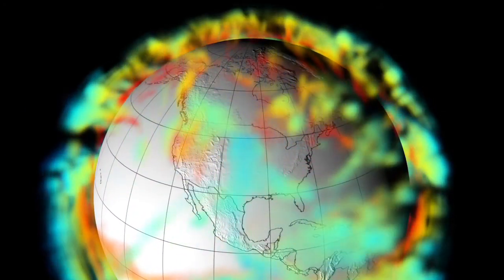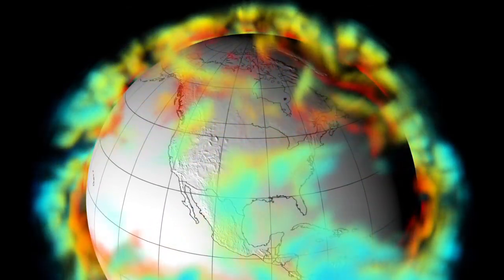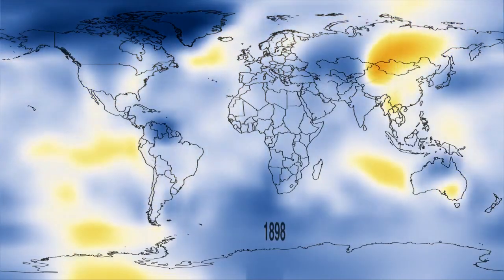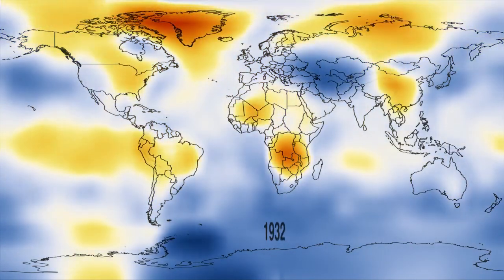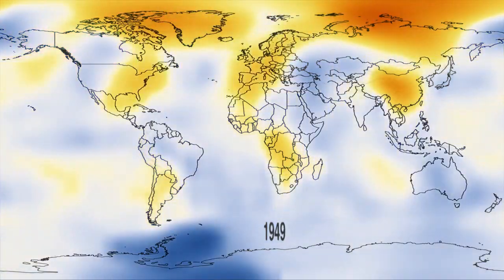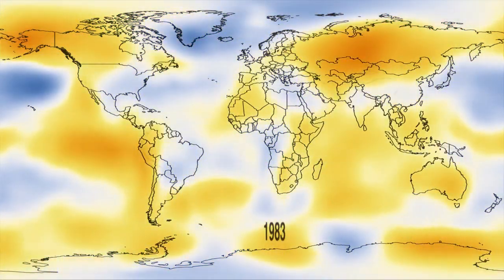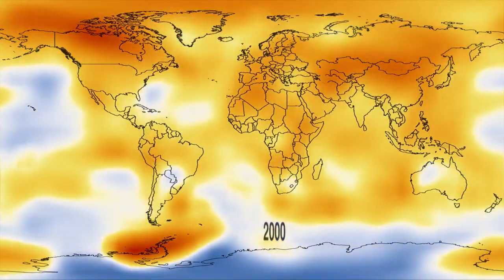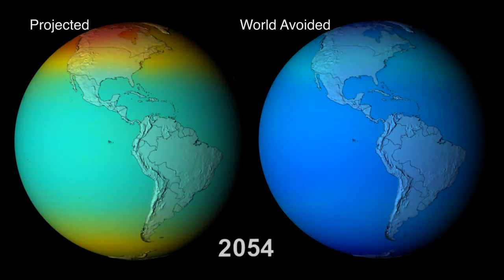MERRA can help meteorologists understand the variations associated with specific weather events in the past. While MERRA gives us a climate picture across decades, the Goddard Institute for Space Studies, or GISS, can extend that view across centuries. GISS models have already unraveled average temperature trends over 200 years. New GISS simulations will cover the last 1,000 years to verify the model's accuracy. They'll also look forward, projecting climate trends to the end of the 21st century.